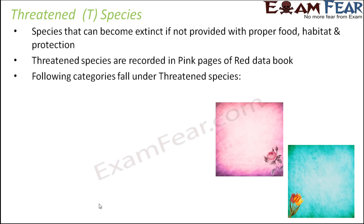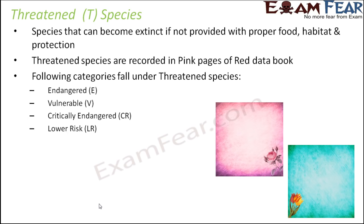The following categories fall under threatened species: endangered, vulnerable, critically endangered, and lower risk. We will discuss each of these four categories in more detail.